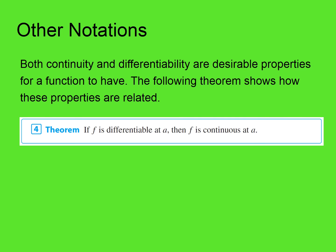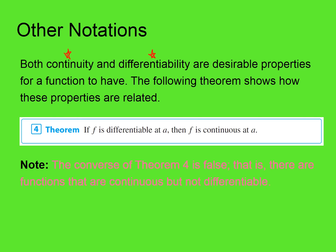Both continuity — remember, the limit as x goes to a of f of x equals f of a, that's continuity at a number a — and differentiability are desirable properties for a function to have. Being able to draw a graph without lifting your pencil from the paper and having smoothness are desirable properties. The following theorem shows how the properties are related: if a function is differentiable at a number a, then it is continuous at a. If it's smooth at a, then you could graph it without lifting your pencil at a. Remember that theorem: if differentiable, then continuous. The converse is not true — you can't say if continuous, then differentiable.